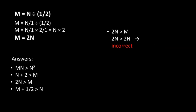The third option says that 2N is greater than M. But if we substitute M, we get that 2N is greater than 2N and that's obviously incorrect. It is equal.